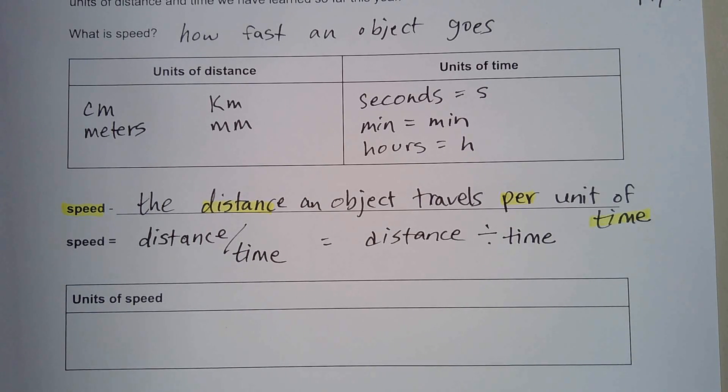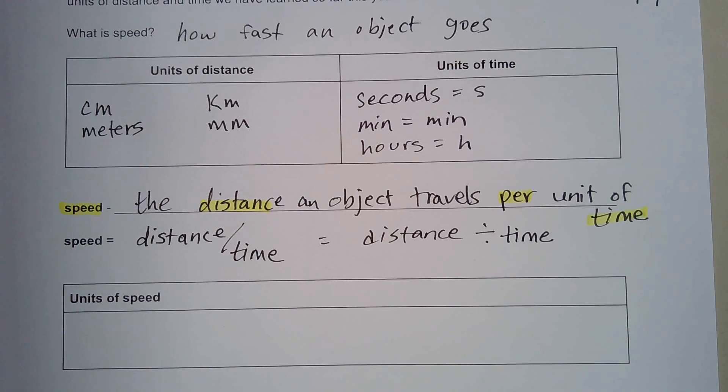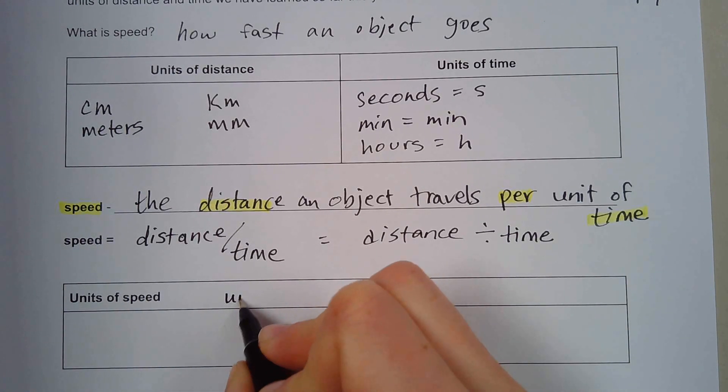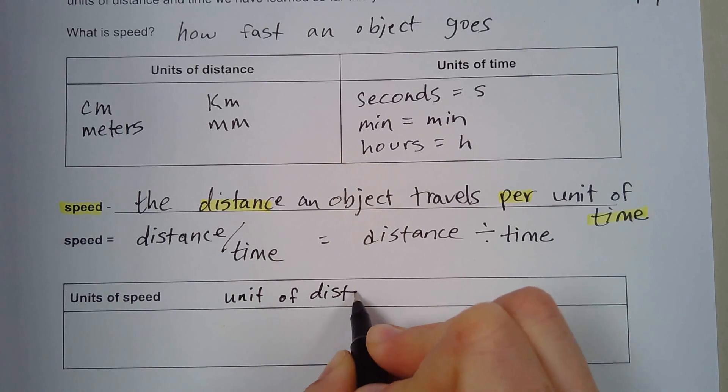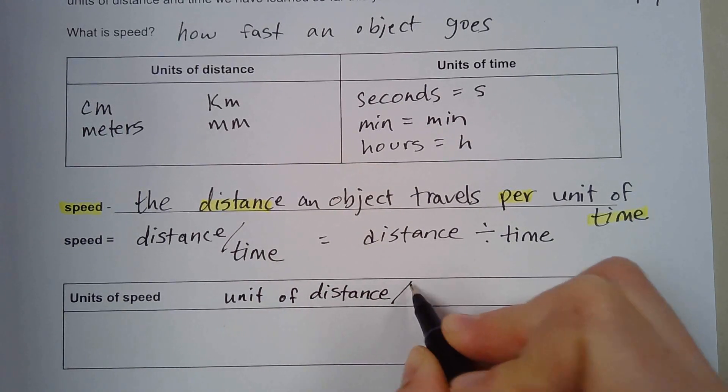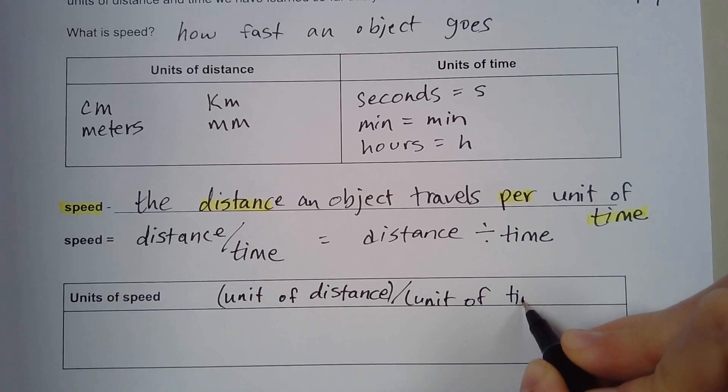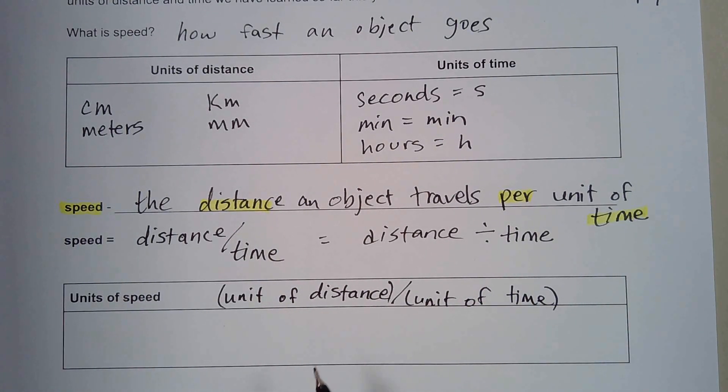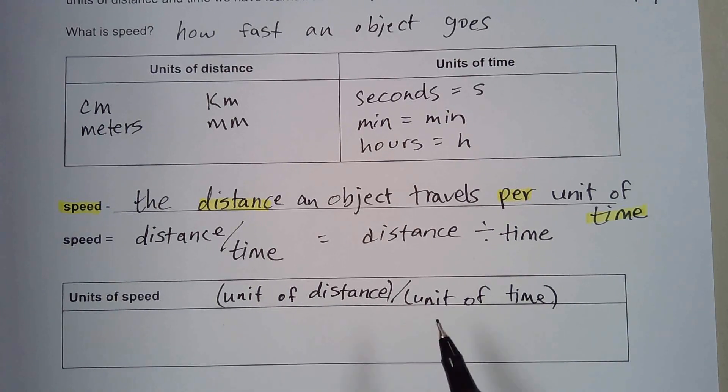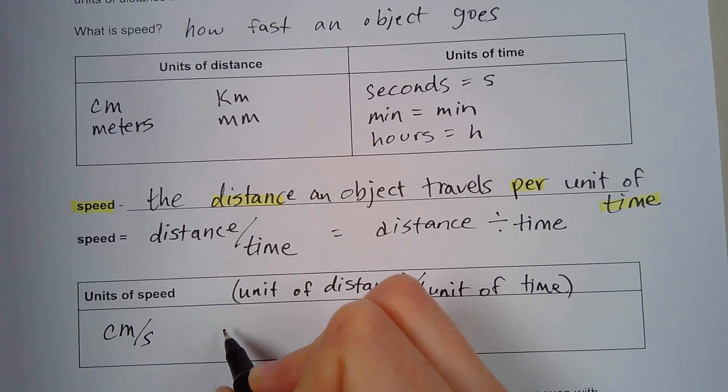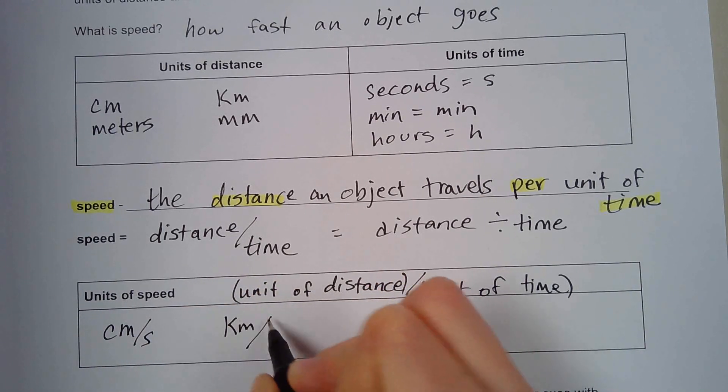Then it says units of speed. I've already said in science, we never have numbers without units. We have to have a unit anytime we have a number. In science, the units for speed are the unit of distance per unit of time. So unit of distance, whatever your unit of distance is per unit of time. Here are some examples. Maybe we do centimeters per second, or maybe we do kilometers per hour.